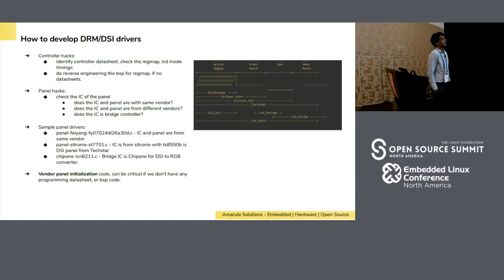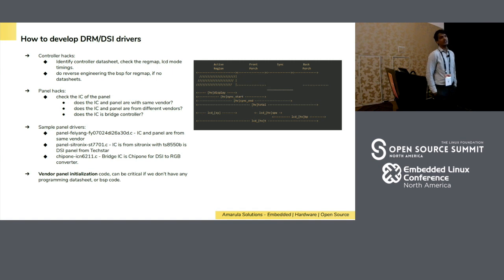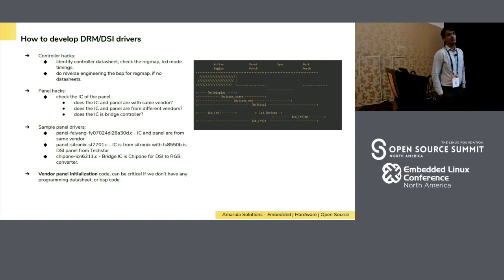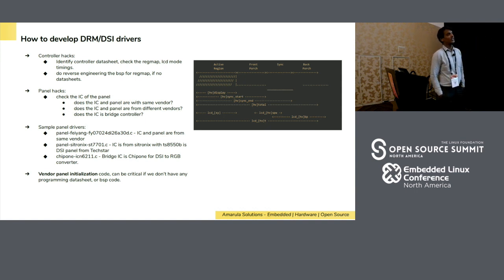These are typical hacks based on my experience. We do some work with Allwinner and basically don't have data sheets at all — we do reverse engineering of the controller register spec. First, identify the controller hacks: do you have a proper datasheet to write a driver? If not, go with BSP and cross-verify everything. Importantly, DRM display parameters are identified as back porch, front porch, vsync, and sync start — common for all SoCs. But some display controllers use different equations. For example, Allwinner uses a different formula to calculate front porch and back porch.